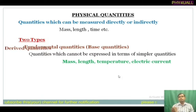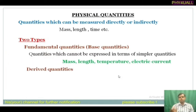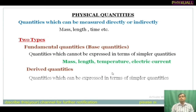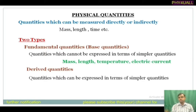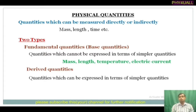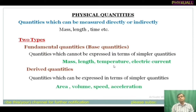The next type of physical quantity is derived quantities. Those quantities which can be expressed in terms of fundamental quantities. Using fundamental quantities we can make a new quantity that is derived from them. Examples are area, volume, speed, acceleration, force, etc.